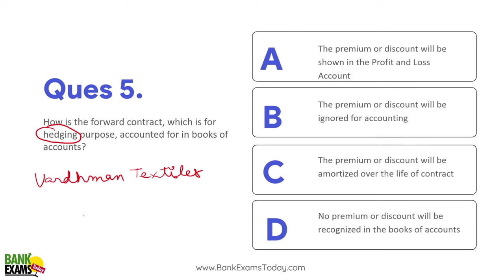Cotton prices heavily impacted their profitability. So they wanted to hedge their position — they didn't want to profit from cotton prices themselves. For example, if cotton is ₹400 per quintal today, they get contracts at ₹400. But if during the year it rises to ₹1200, their raw material cost shoots up. So they hedge their position by buying contracts — for them, hedging is a kind of insurance agreement.